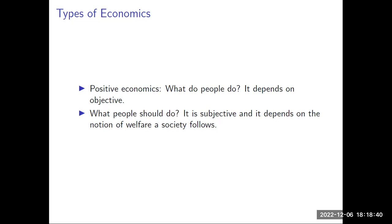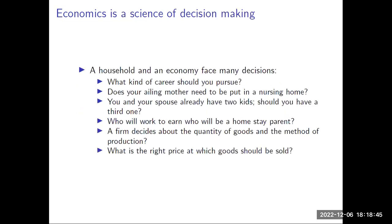Normative economics is subjective and depends on the notion of the welfare of society — how you want to see the society. For example, positive economics tells you what the unemployment rate in your country is, while normative economics tells what the unemployment rate should be. Positive economics tells what the poverty rate is in your country; normative economics tells what the poverty level should be. Similarly, income distribution and all other issues affecting people fall under this distinction.